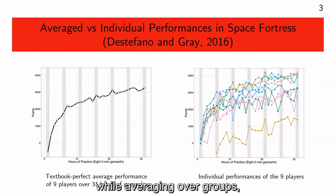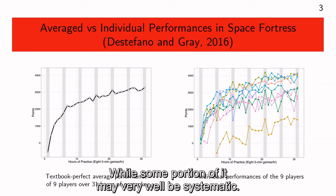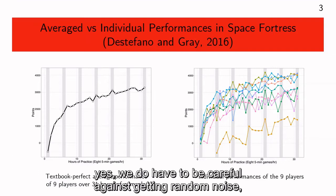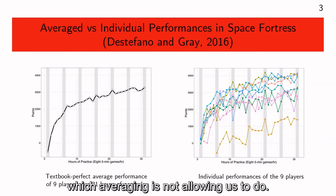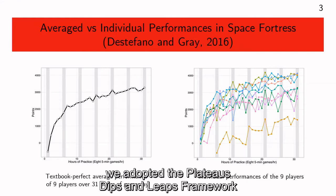While averaging over groups, individual differences are being treated as random noise, while some portion of it may very well be systematic. When we look for the systematic variations, we do have to be careful against fitting random noise, but we must also retain the information first — which averaging is not allowing us to do. Therefore, we took a different approach.